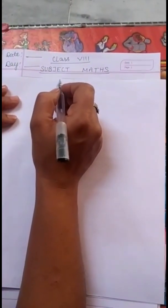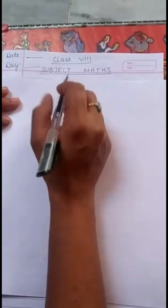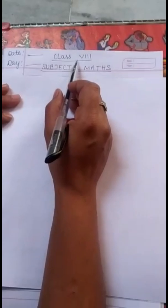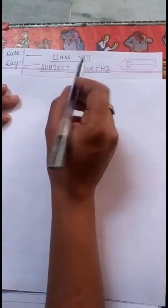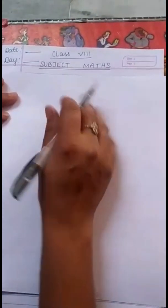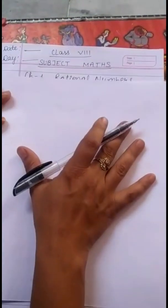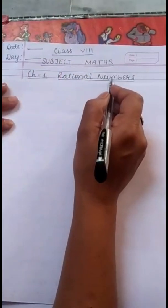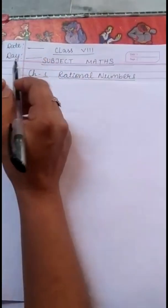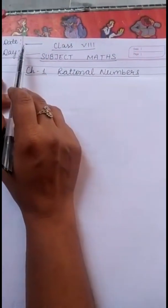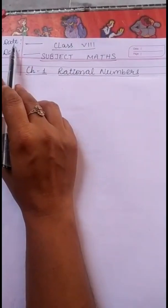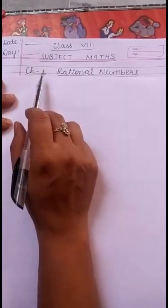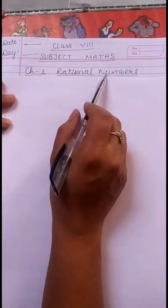Good morning students. Today we are going to start the very first topic of class 8. The very first topic is chapter number 1, Rational Numbers. Students, maintain your notes. Mention the date, day, and the name of the chapter.